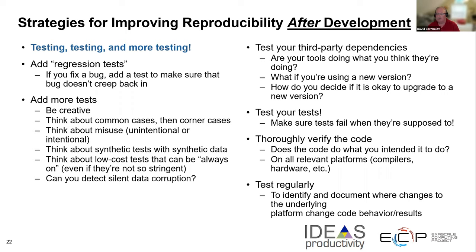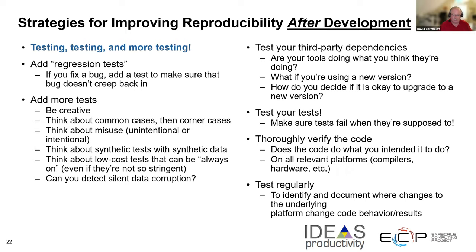It's obviously really important to thoroughly verify the code — basically, does your code do what you intended it to do? Check this on all the platforms relevant to your work: the different compilers that you or your users use, different hardware platforms — GPUs, CPUs, FPGAs. Try to make sure all different approaches and platforms are covered. Test regularly because even if your code is not changing, the system you're running on is undoubtedly changing — operating system updates, library updates, and things like that. You actually want to be doing some tests just to capture changes in the underlying platform that might impact your simulation results.